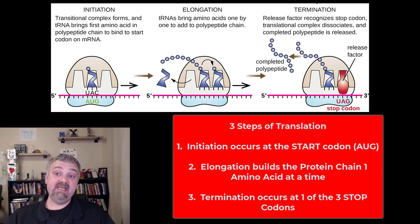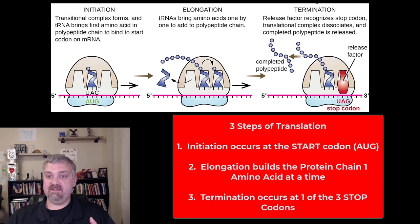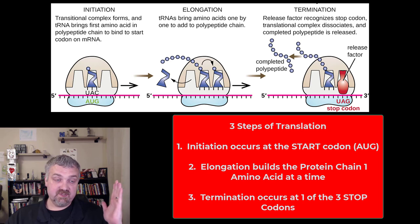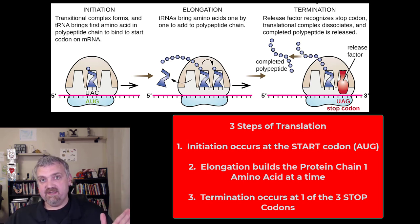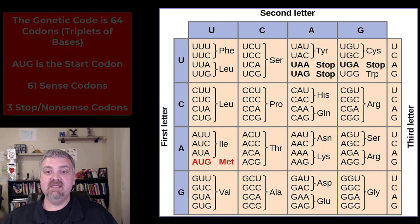Termination is going to be when the ribosome runs into one of your three stop codons. So it goes start codon, elongation, to the stop codon. Just like with transcription — it was promoter sequence of DNA to terminator sequence — this is start codon to stop codon.